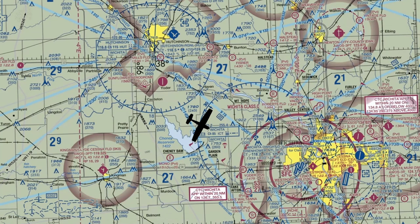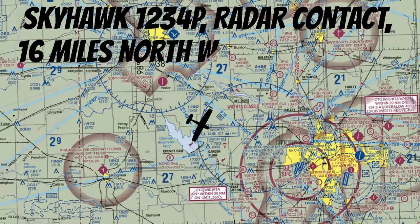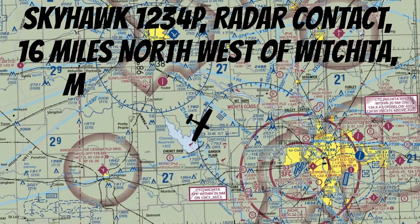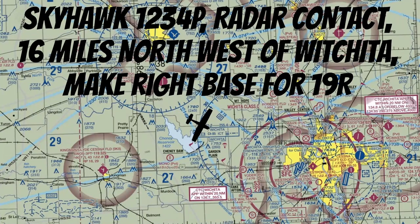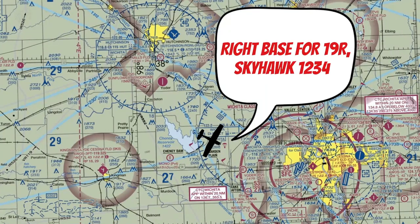Once he does find you, you're going to hear the words 'radar contact,' and then they'll usually give you some instructions. For example: 'Skyhawk 1-2-3-4 Papa, radar contact, 16 miles northwest of Wichita. Make right base for 1-9-right.' You'd then read back: 'Right base for 1-9-right, Skyhawk 1-2-3-4 Papa.'